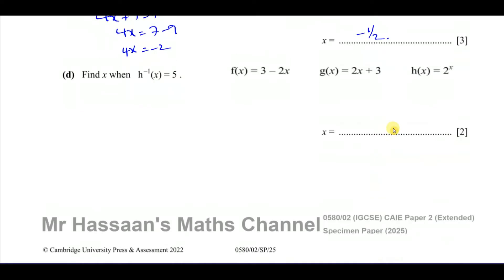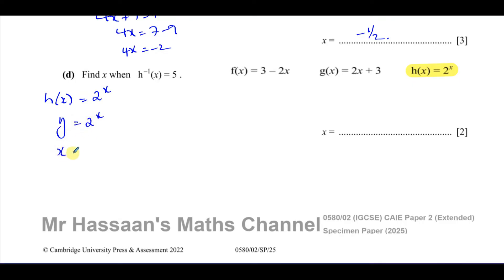For part (d), it says find x when h⁻¹(x) = 5. Looking at function h, which is h(x) = 2^x, finding its inverse algebraically requires logarithms, which is beyond the IGCSE syllabus. Instead, we use the principle that applying the original function to both sides cancels the inverse. Just as adding 3 and subtracting 3 are inverse operations that cancel, applying h to h⁻¹(x) cancels out, leaving just x.